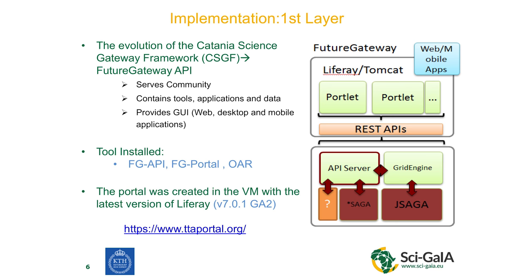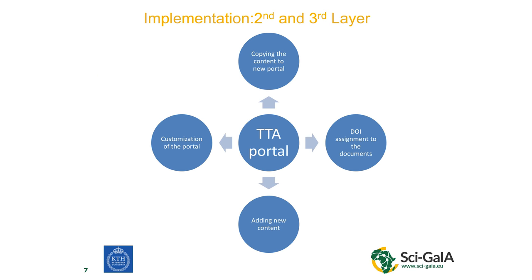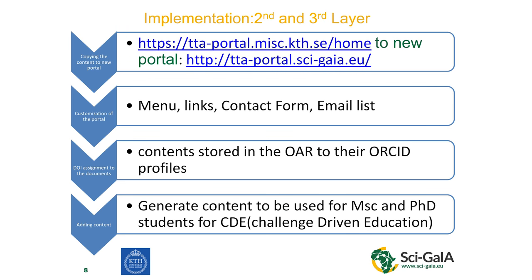The second and third layers were categorized into four areas. The main idea was to move the content because initially it was at KTH, and since we are collaborating with another university in Africa, we had to move content from KTH to our new portal. The first target was to copy content from the old portal to the new one, along with customization, adding new content, and assigning DOIs to documents.